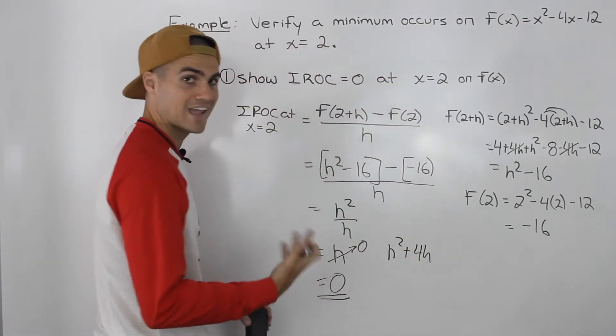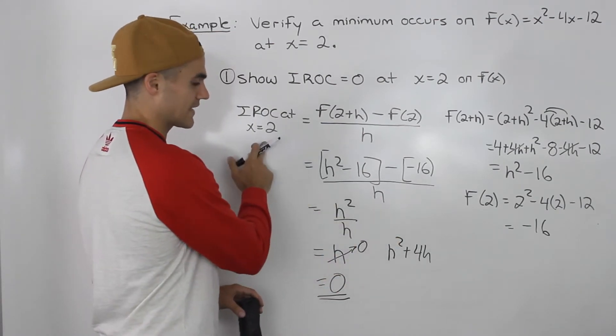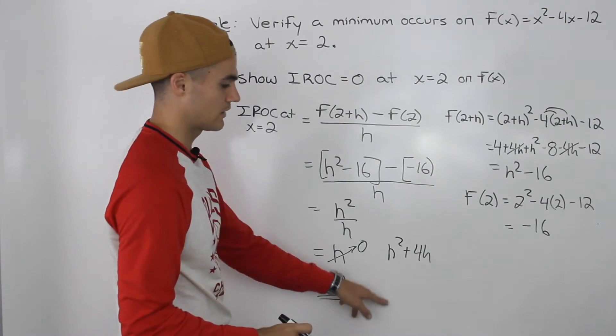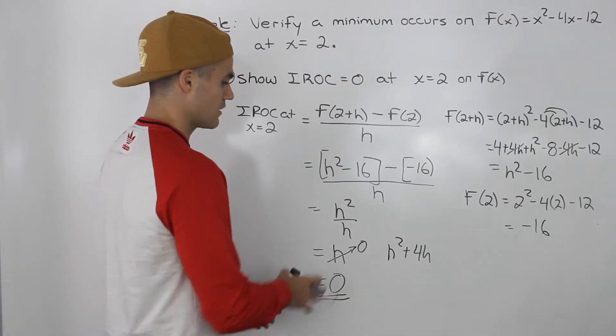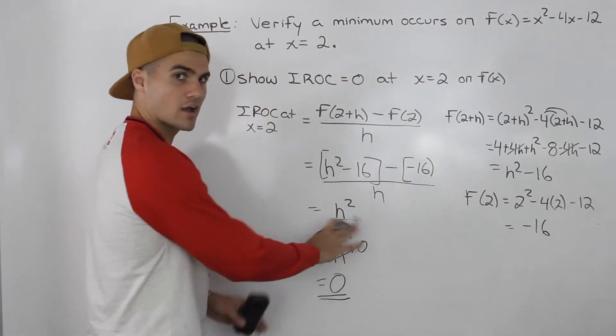You can also have maybe something like 4h² + 4h. Notice how each expression has an h attached to it. So when you plug in 0 for the h's to find that specific instantaneous rate of change, you'll end up with 0 all the time.